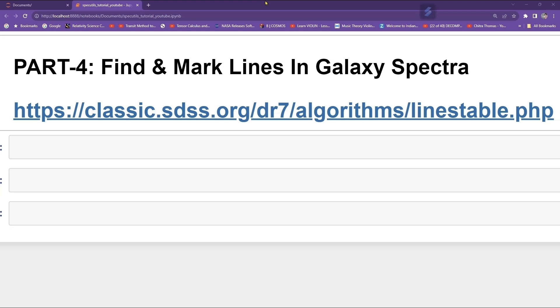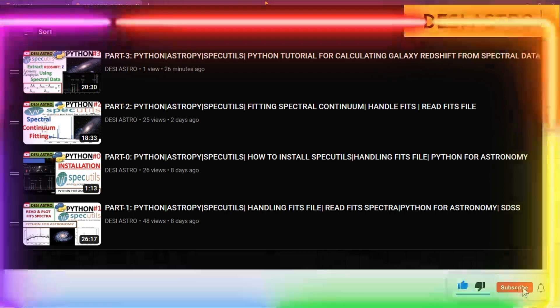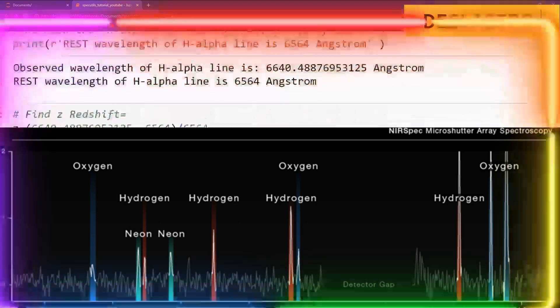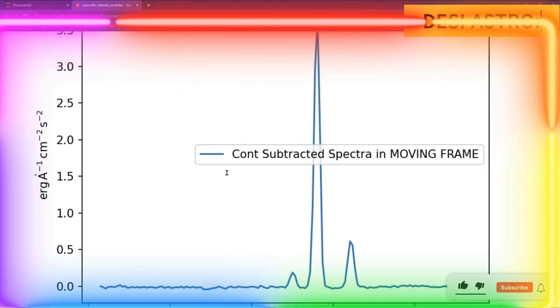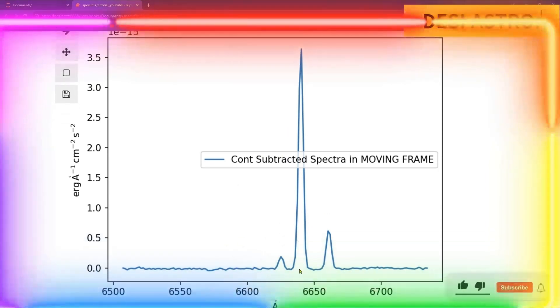Welcome to the CS2. So in this part 4 tutorial on Spec Utils, our objective is to find and mark some prominent lines in galaxy spectra. Earlier we have seen that our galaxy contains some lines. These are like X represent line of elements in the galaxy. So what we have to do, we have to mark at what wavelength these lines appear in the galaxy.